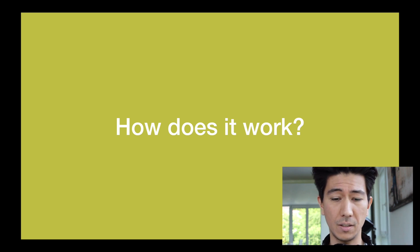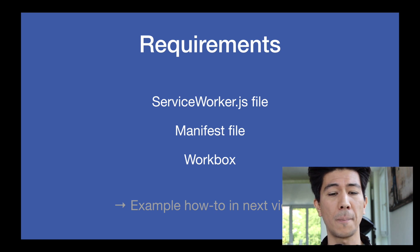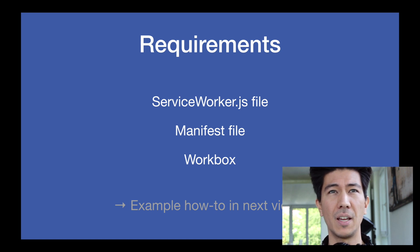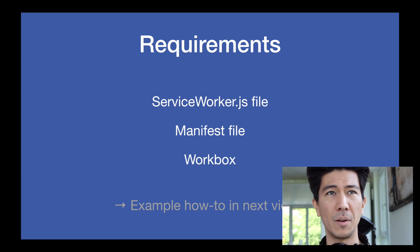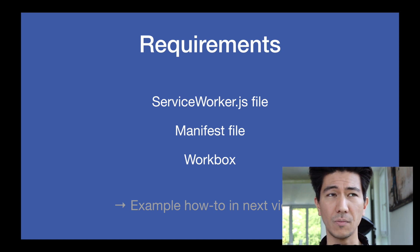So how does it work? There are three key components you need to know about: the service worker file, the manifest file, and Workbox. The service worker file is just a JavaScript file. It runs in the background and doesn't have any access to the window object or the DOM — its only purpose is to intercept requests to assets like videos or images, cache them, and deliver them back to the app when needed.